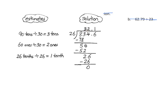The next thing that is done is we multiply our 3 times the 26 — and again, this is 26 tens. We multiply it and we get 78 tens. You can see that we record that under our dividend right here. The next thing we do is subtract, and we get 5. We have 5 tens.